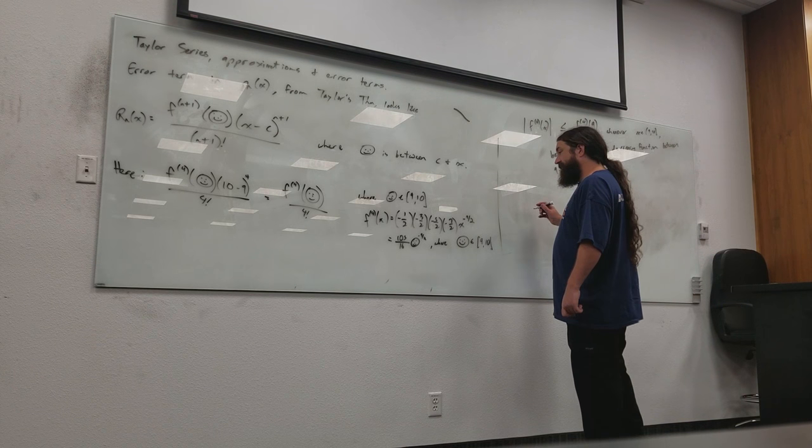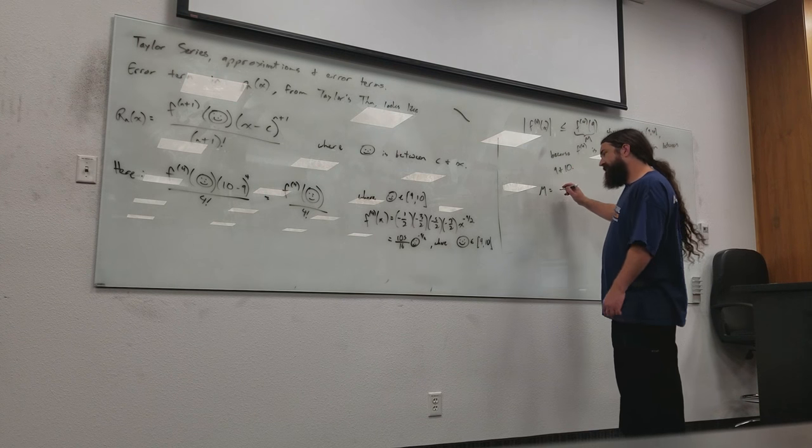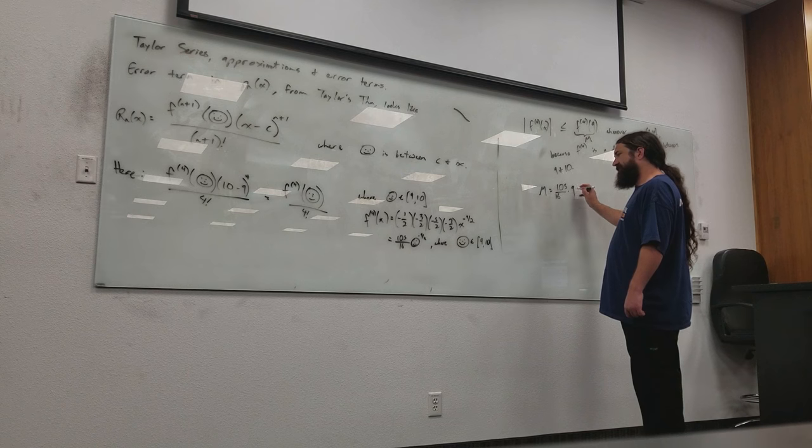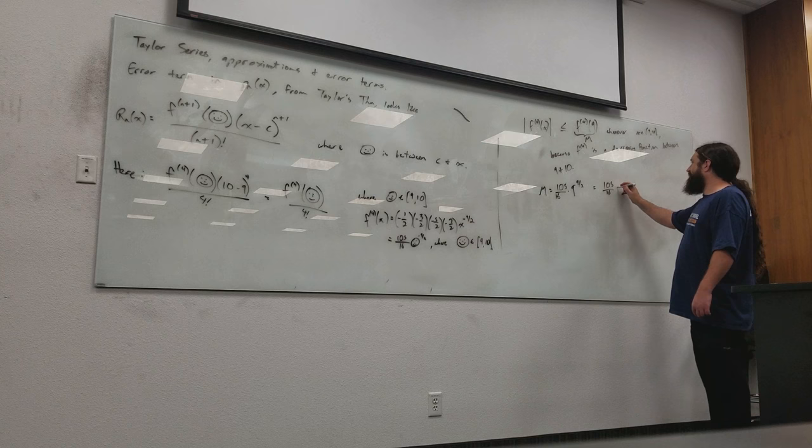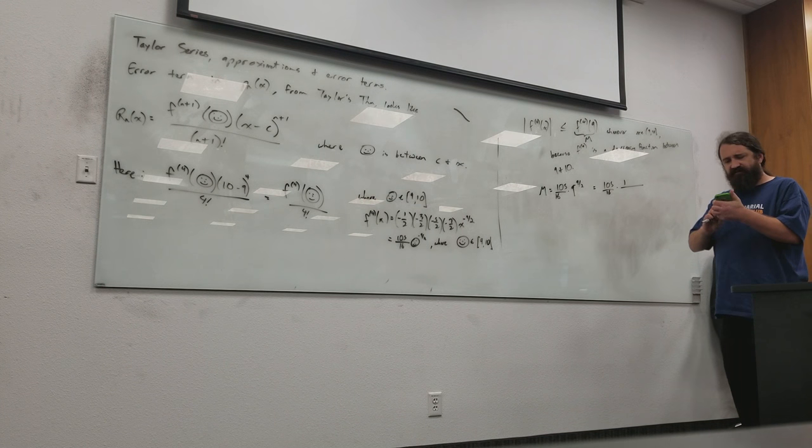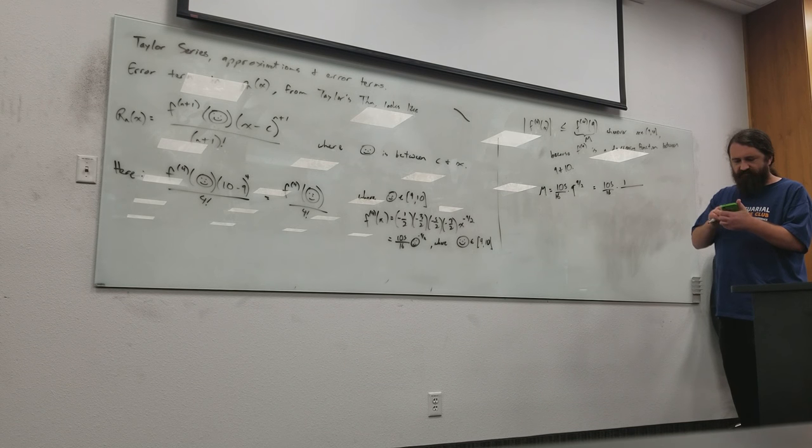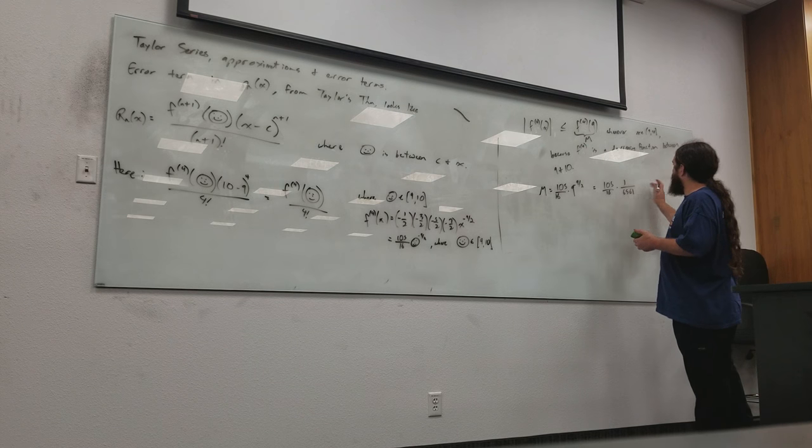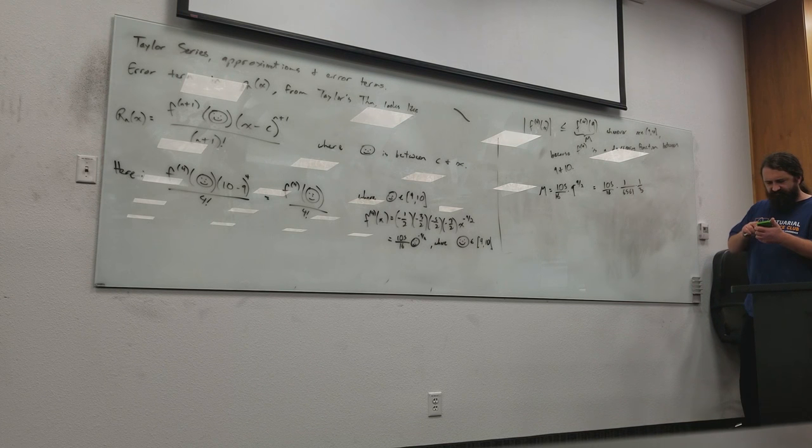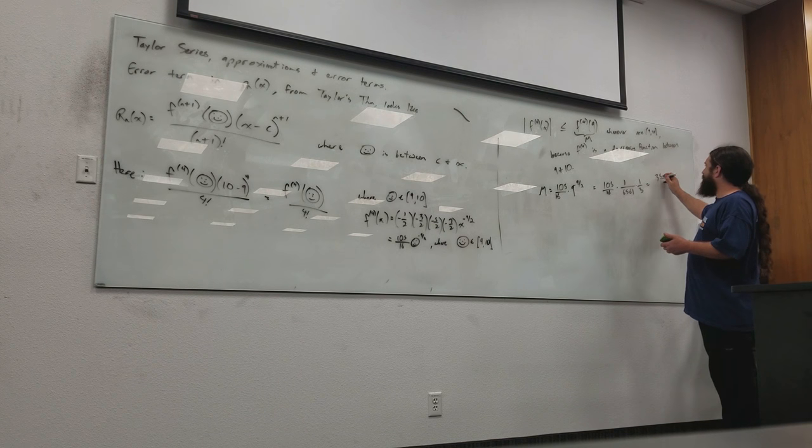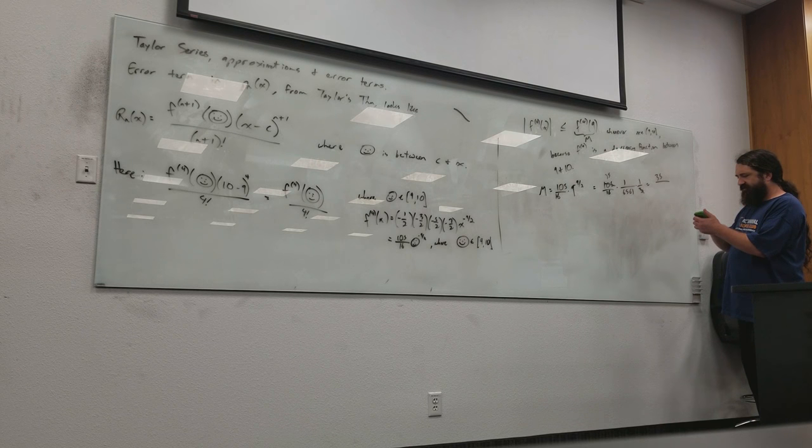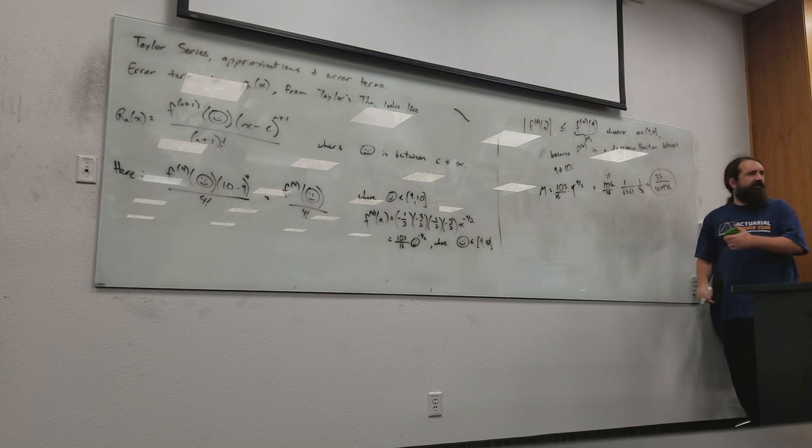Looks like it is 105 over 16 times 9 to the negative 9 halves. It's 105 over 16 times 1 over, 9 to the 2 is, what, 4 and a half? I don't know what 9 to the 4th is, but let's look. So, it'll be 65, 61, and then also times 3, all right? Because that's 4 and a half powers of 9. All right. So, I think 3 goes into 105, because you get 35 on top. So, this is 35 over 65, 61 times 16 is 104, 976. So, there's your capital M that's going to work for that. All right.